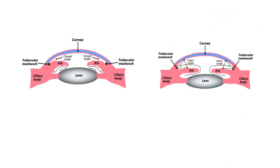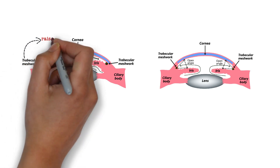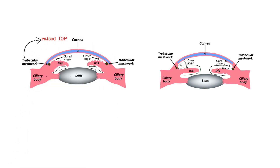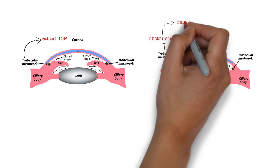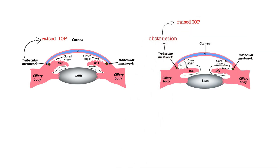Look at these images. You can see that the iris mechanically blocks the trabecular meshwork and ciliary body, which leads to increased intraocular pressure. Due to the rise in intraocular pressure, the iris is pushed from behind. Whereas open angle glaucoma is caused by overproduction or obstruction of the outflow of aqueous humor through the trabecular meshwork of the canal of Schlemm. You can see here the angle is open.